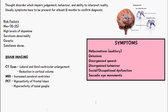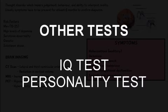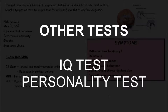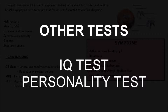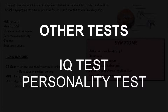Other tests you can do for schizophrenia are things like IQ tests and personality tests. For an IQ test, they'll usually score a bit lower, and that could be due to low intelligence at the onset of the disease, or it could be due to deterioration as a result of the disease. A personality test may show abnormal findings such as bizarre ideas and theories.